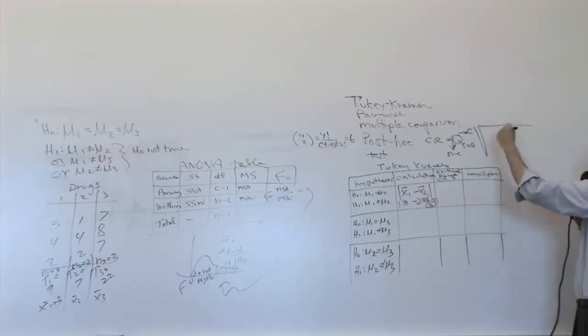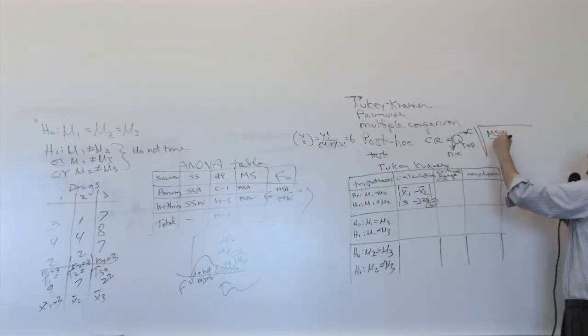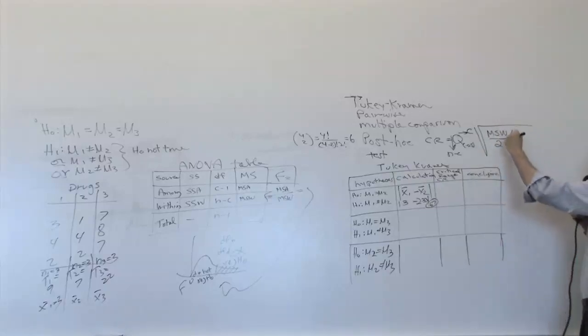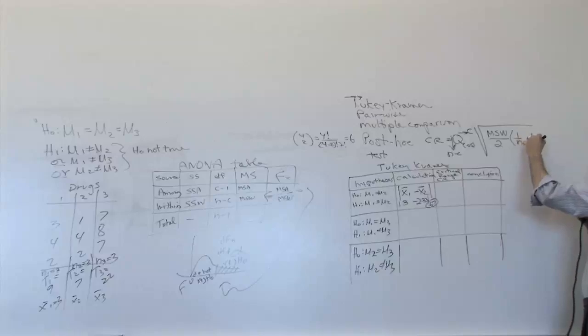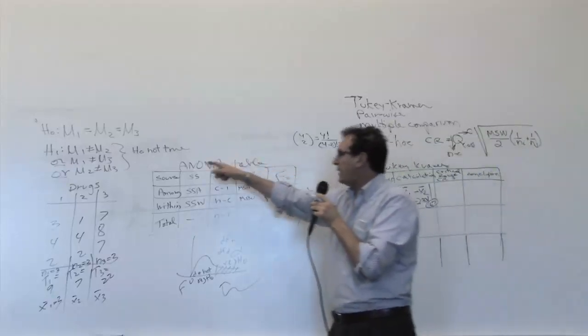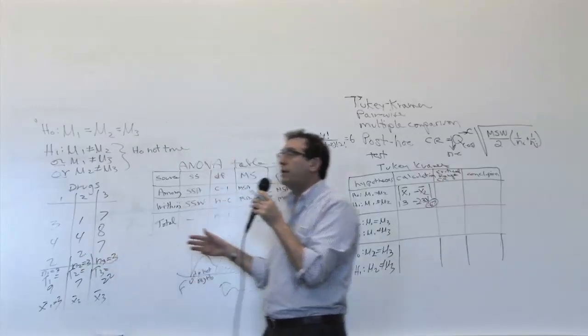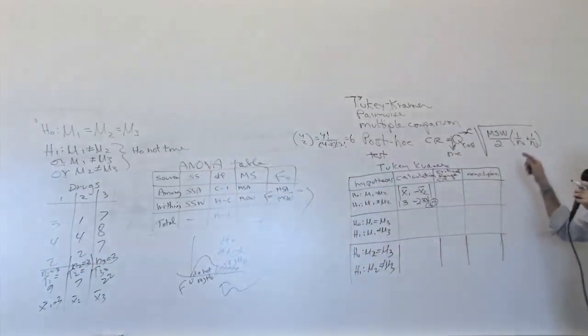And this, in turn, is multiplied by msw divided by 2. So it's like the variation divided by 2 times 1 over ni plus 1 over nj. And again, this is on the board. Okay. Now, somebody said, what is ni and nj? Well, we had the exact same symbol in the formula for the SSA and the SSW. Remember, this is the n1, this is the n2, and this is the n3.